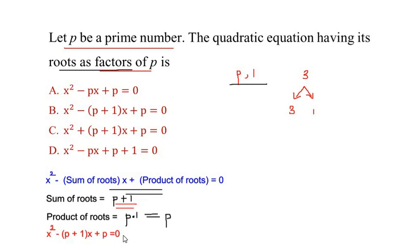Substituting the values we get x² - (p + 1)x + p = 0. So this is the quadratic equation having its roots as factors of p. So here the option is B.